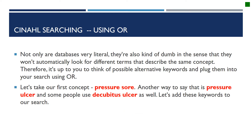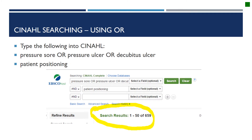Databases won't automatically look for different terms that describe the same concept, so it's up to you to think about possible alternative keywords and plug them into your search using OR. For our first concept, pressure sore, another way to say it is pressure ulcer, and some people say decubitus ulcer as well. Typing pressure sore OR pressure ulcer OR decubitus ulcer and patient positioning now gives us 659 search results.